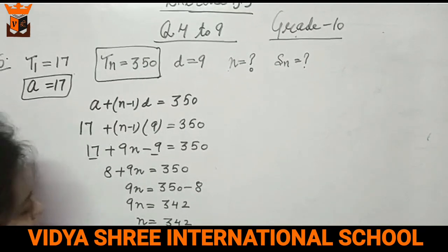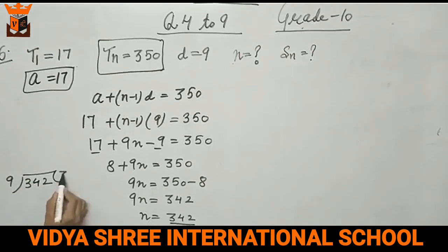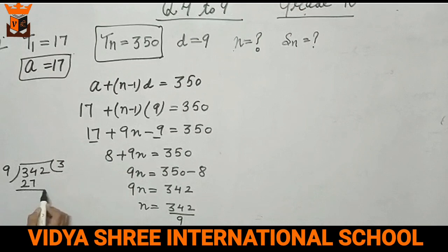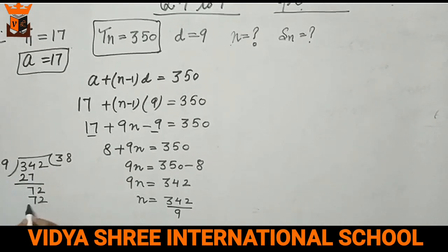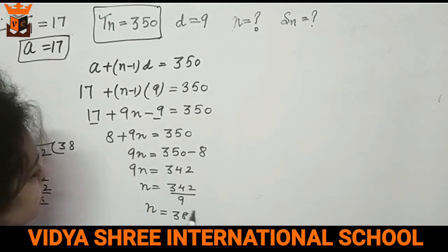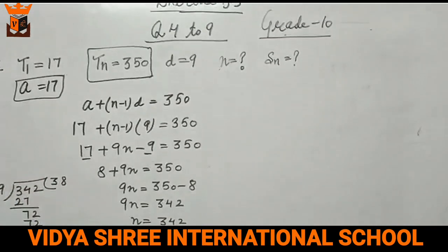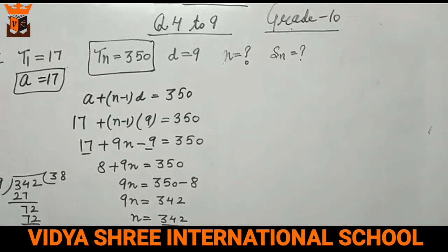We will cut this. 342 divided by 9. 9 times 3 is 27, 9 times 8 is 72. After cutting, n is 38. So we found that the number of terms is 38.